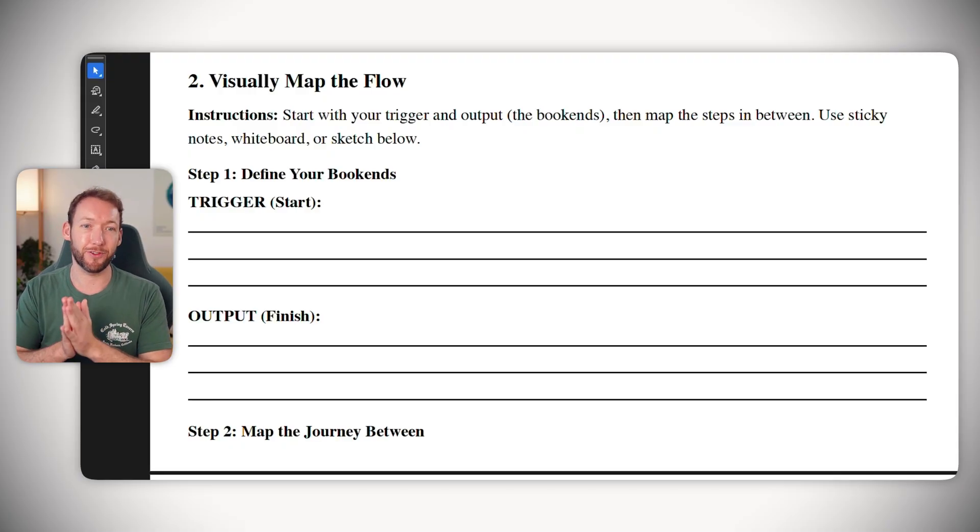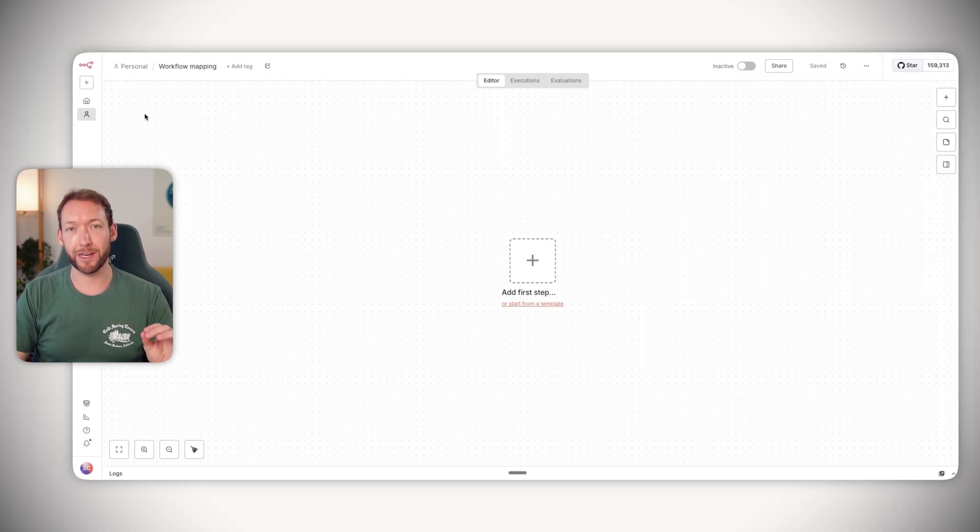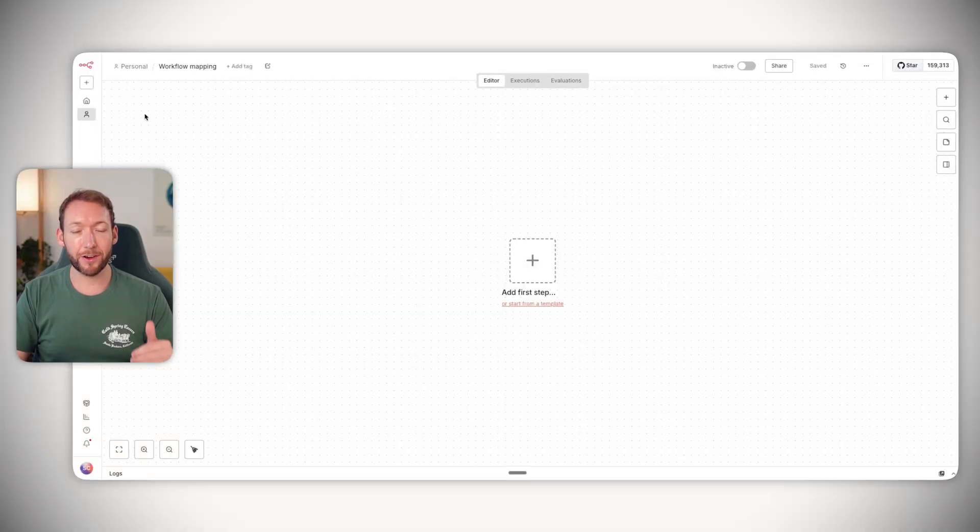But we have a really good way to start this, which is we start with the bookends. We start with the actual trigger of the process. What is going to be our trigger for this CV summarization? And what is going to be the output? What do we want the end result to be? And those are really easy to define because we've already talked about them in the outcomes. And we always start this way because it's then easy to work out what comes in the middle and actually build from start to finish backwards. And you can use absolutely any medium you want for this - sticky notes, paper, or the N8N canvas, which is what we're going to use. But we're just using it to draw, not build.